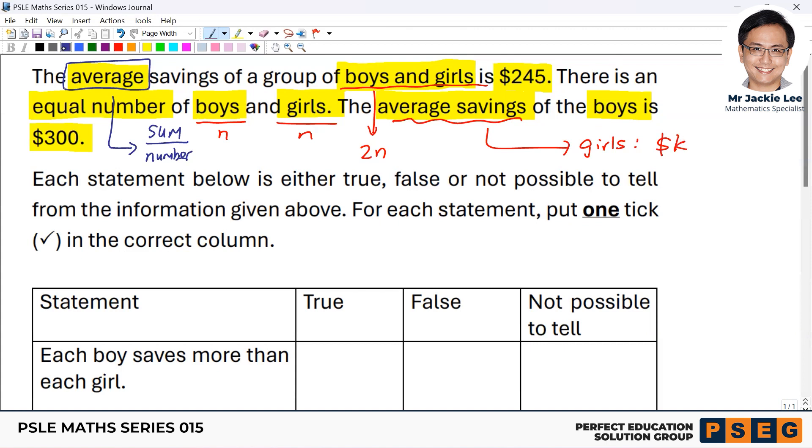So with all this stuff, I think we can now set up the equation. So for the boys, the total sum will be the average $300 times the n. So 300n. We do the same thing for girls also. Which is kn.